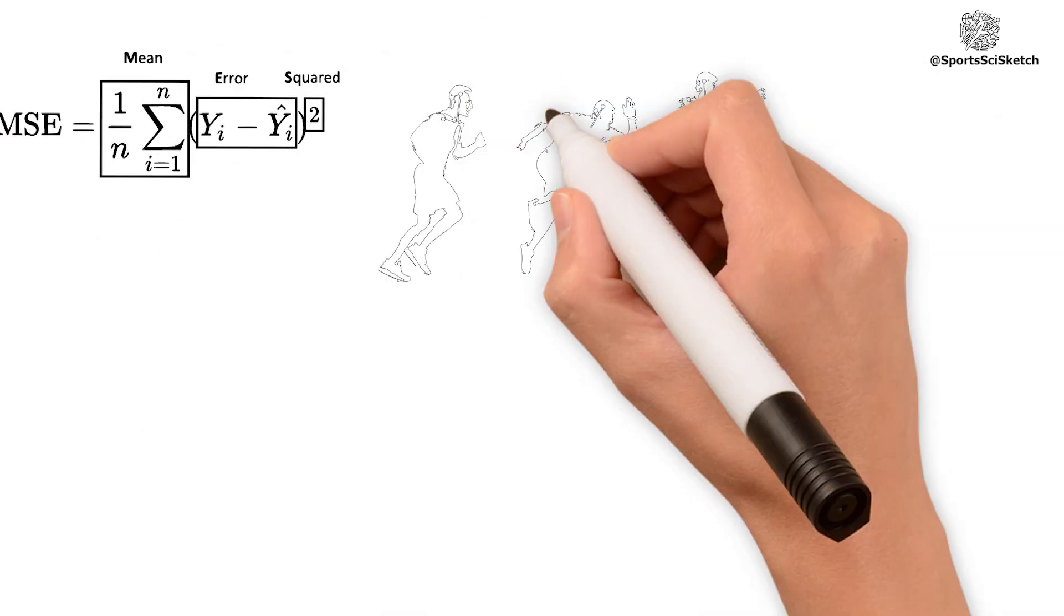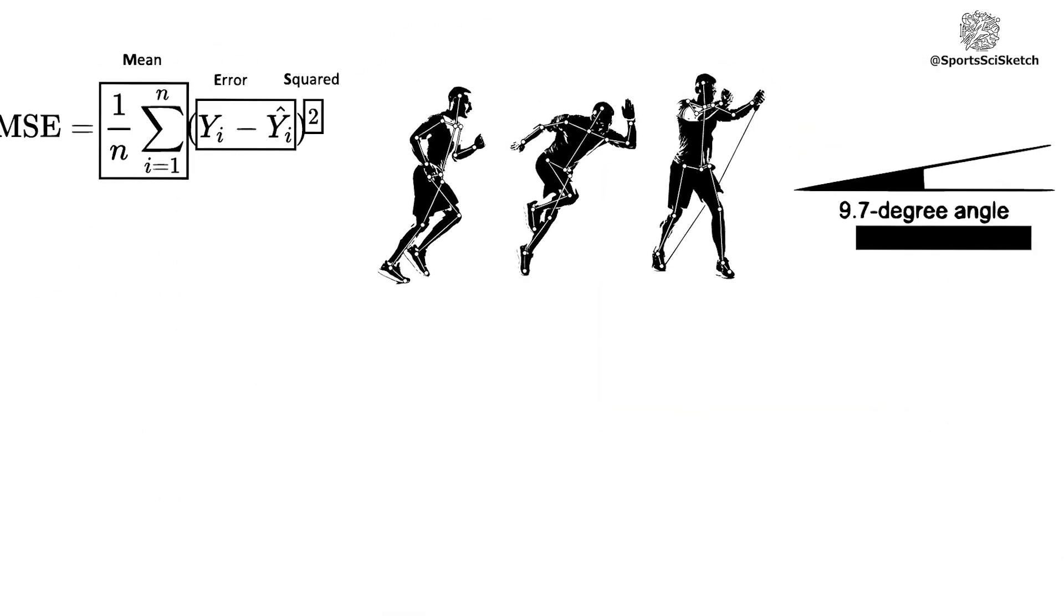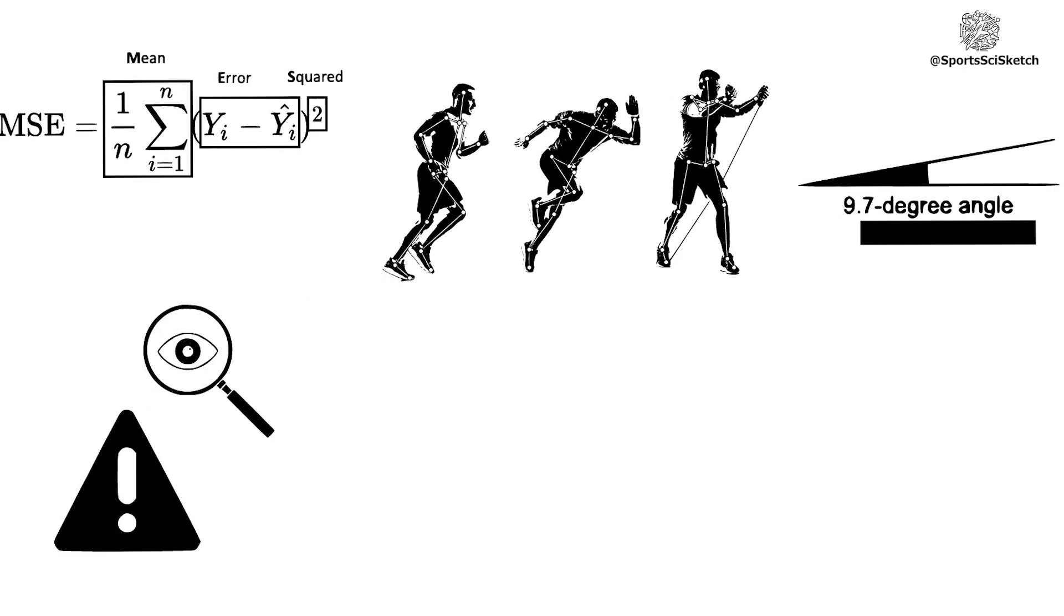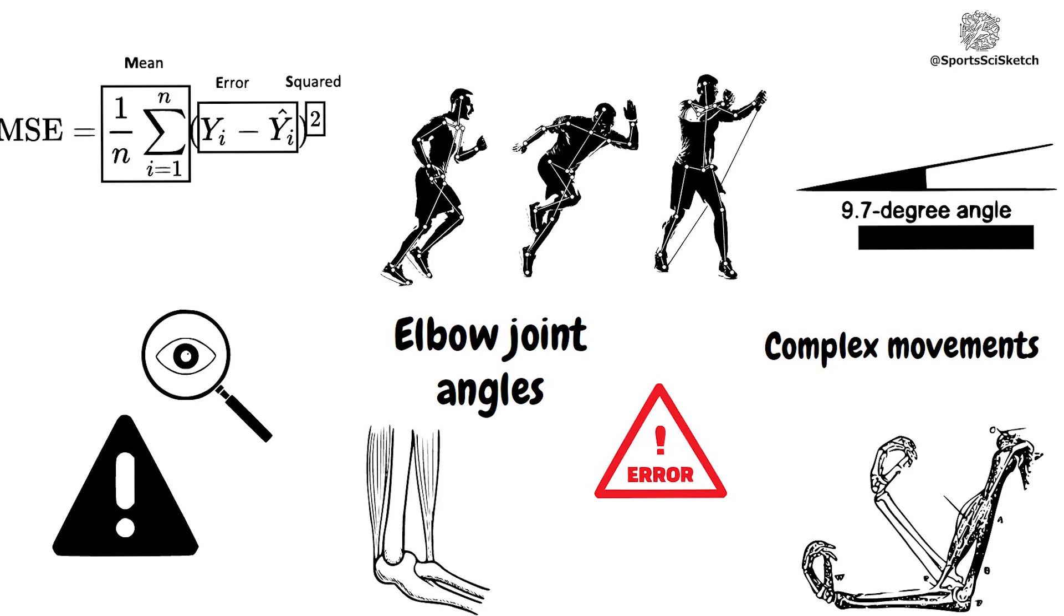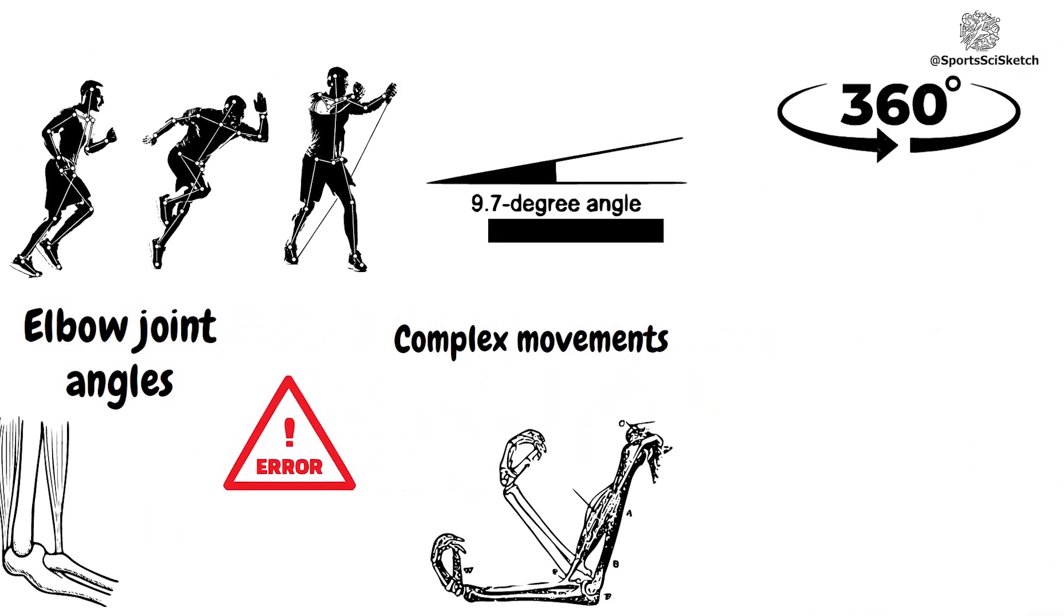The mean errors for athletic movements were 9.7 degrees, with the highest errors observed in elbow joint angles. Errors were larger for complex movements, such as the 360-degree turn while spreading arms.